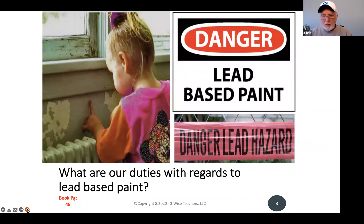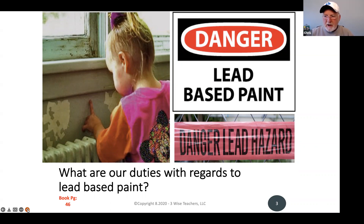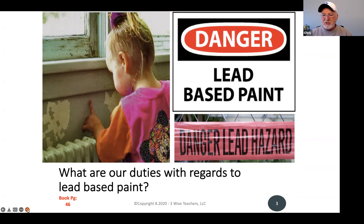Now let's talk about some specific items. The first is lead-based paint. There are a couple of dates involved. The Lead-Based Paint Hazard Reduction Act was passed in 1992 — that's not the important date. What matters is that it applies to houses built before 1978. You were not allowed to use lead-based paint in residential properties after December 31st, 1977. So houses built before January 1st, 1978 are subject to lead-based paint disclosure requirements.